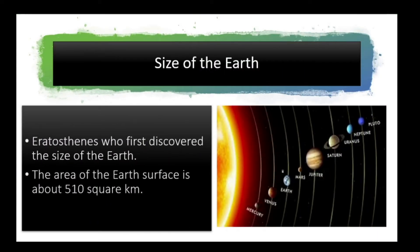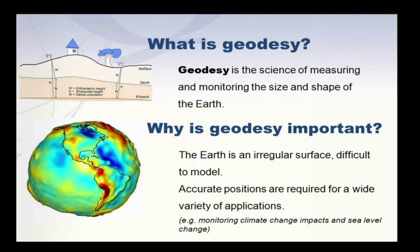Here is the size of the Earth. Eratosthenes is the one who first discovered the size of the Earth. The area of the Earth's surface is about 510 square kilometers.